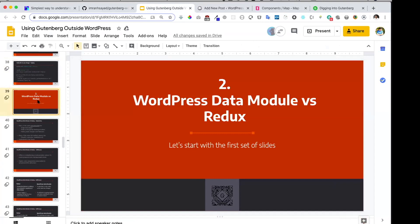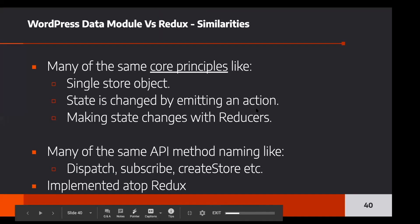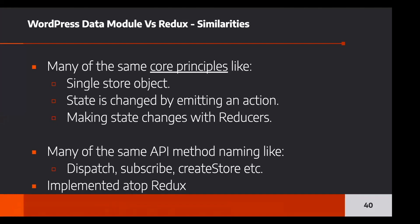Now let's talk about the differences between the WordPress data module and Redux. We know it's built on top of Redux, and many core principles are shared — both use a single store object, state is changed by emitting an action and making state changes with reducers, and many of the same API method names are used, like dispatch, subscribe, and createStore.